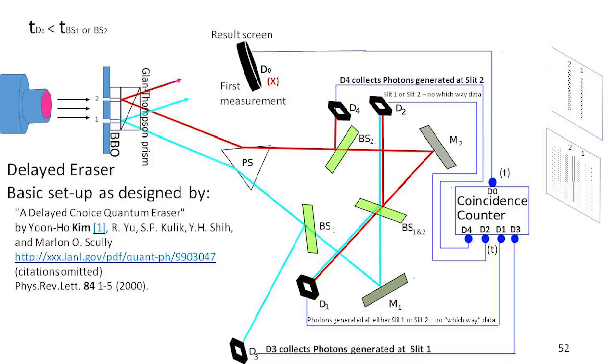Now a beam splitter is a device that when a photon gets to it, it can either be transmitted or reflected. And it's a 50-50 chance that it will be one or the other. So half the time it will be reflected up to D4, another detector. Every time D4 gets a particle in it, the experimenter will know that a particle went through slit 2, because the only way to get to D4 is go through slit 2.